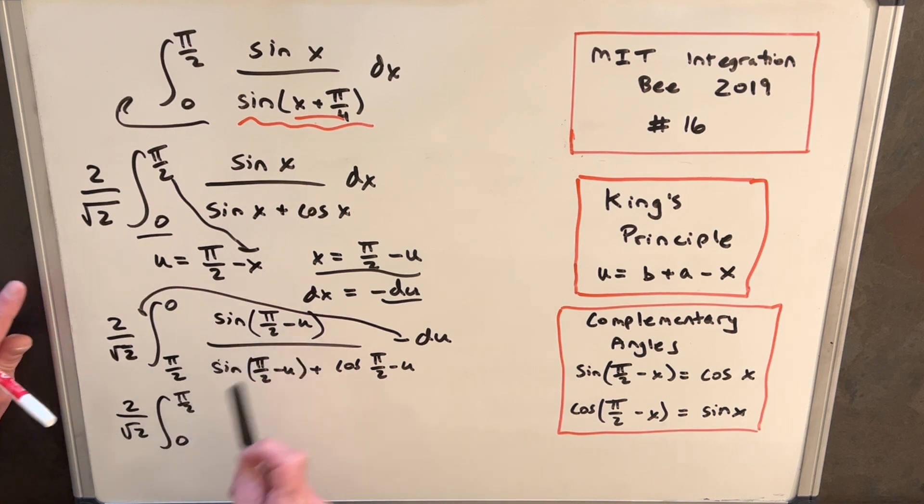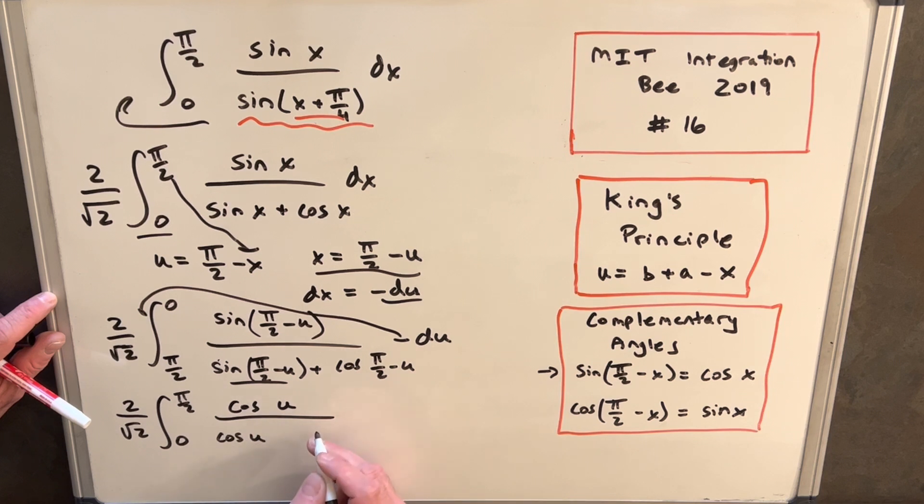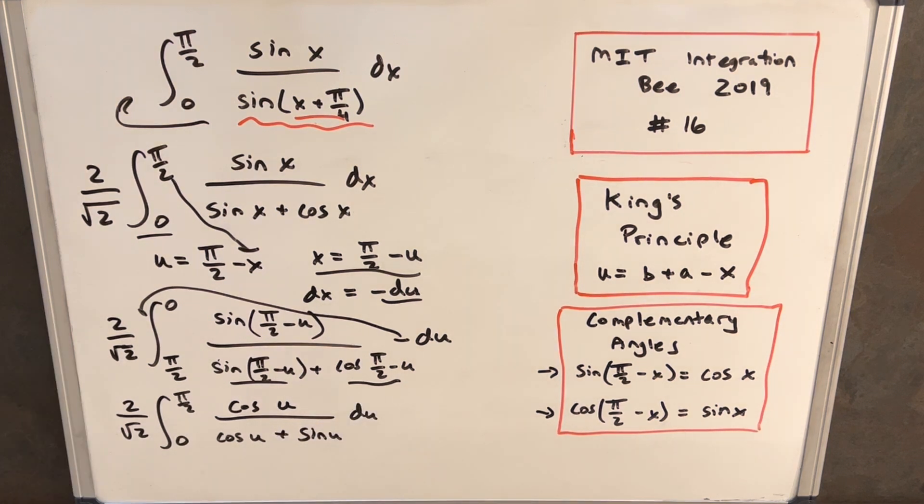So I have the complementary angle formula over here to the right, so starting with sine pi over 2 minus u, but that's just going to be cosine of u using the first formula. And then we'll use it again here, so this is going to be cosine of u. And then cosine of pi over 2 minus u, using our second formula, this piece is going to be just sine of u.